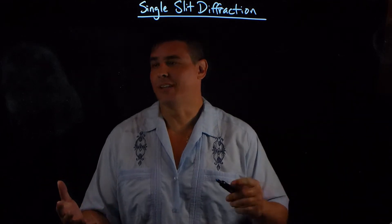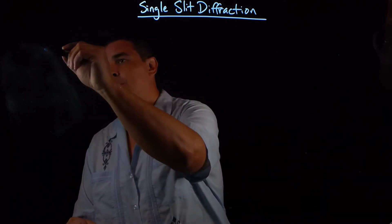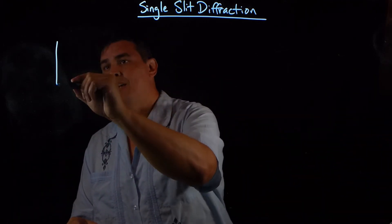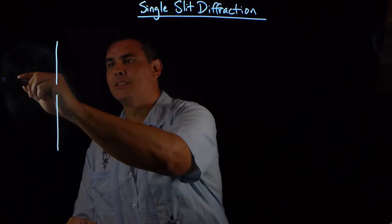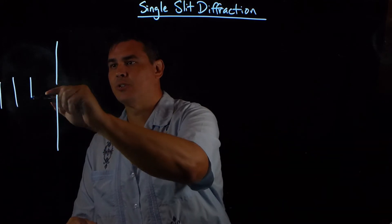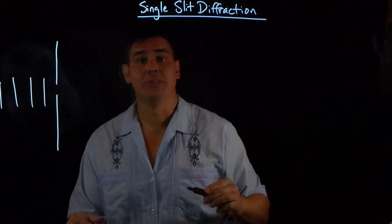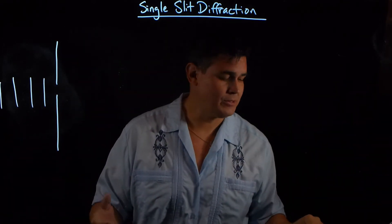We've already talked about double slit interference, so if you get what's happening with double slit interference, then you can understand what's happening with single slit interference.